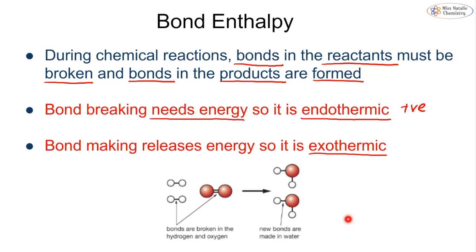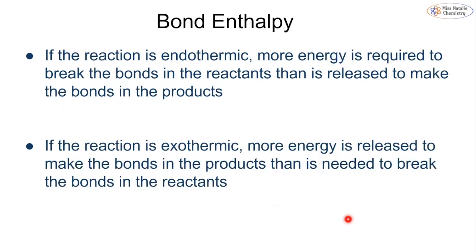For example, hydrogen reacting with oxygen gives us two molecules of water. We break the bonds between hydrogen and oxygen, requiring energy, and then release energy when making the bonds in water. If the reaction is endothermic overall, we require more energy to break bonds than is released when making them. If exothermic, we release more energy overall than we need to break the bonds. Once we start doing calculations this becomes clearer.